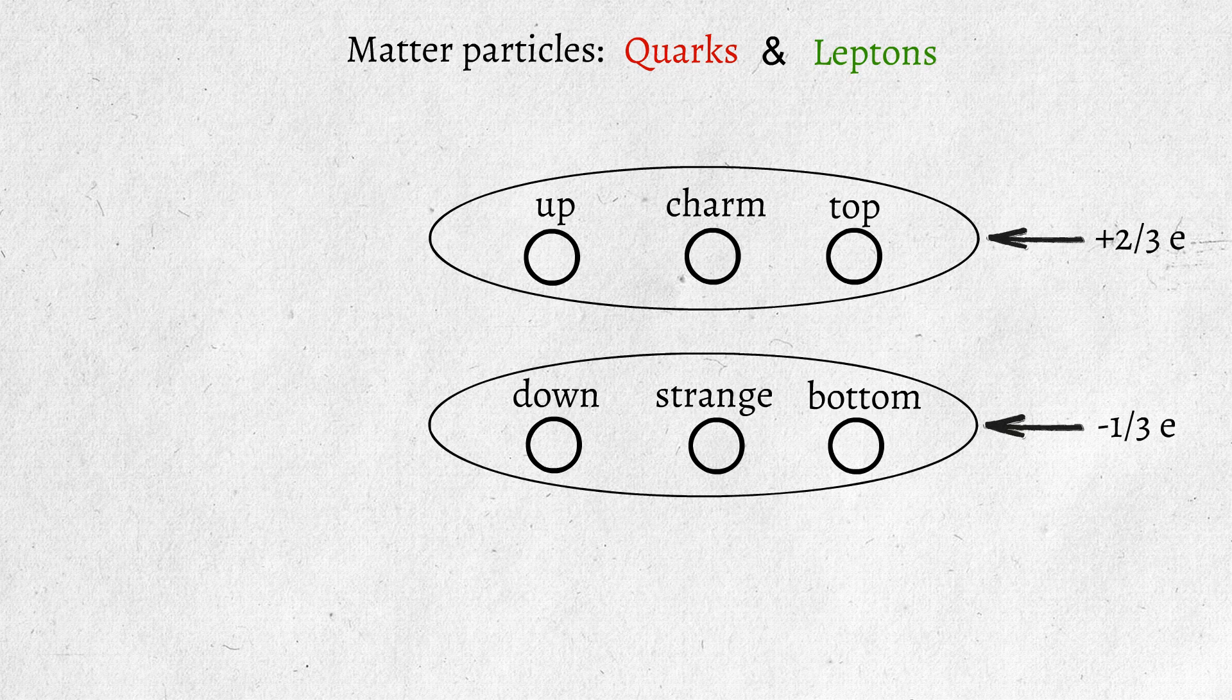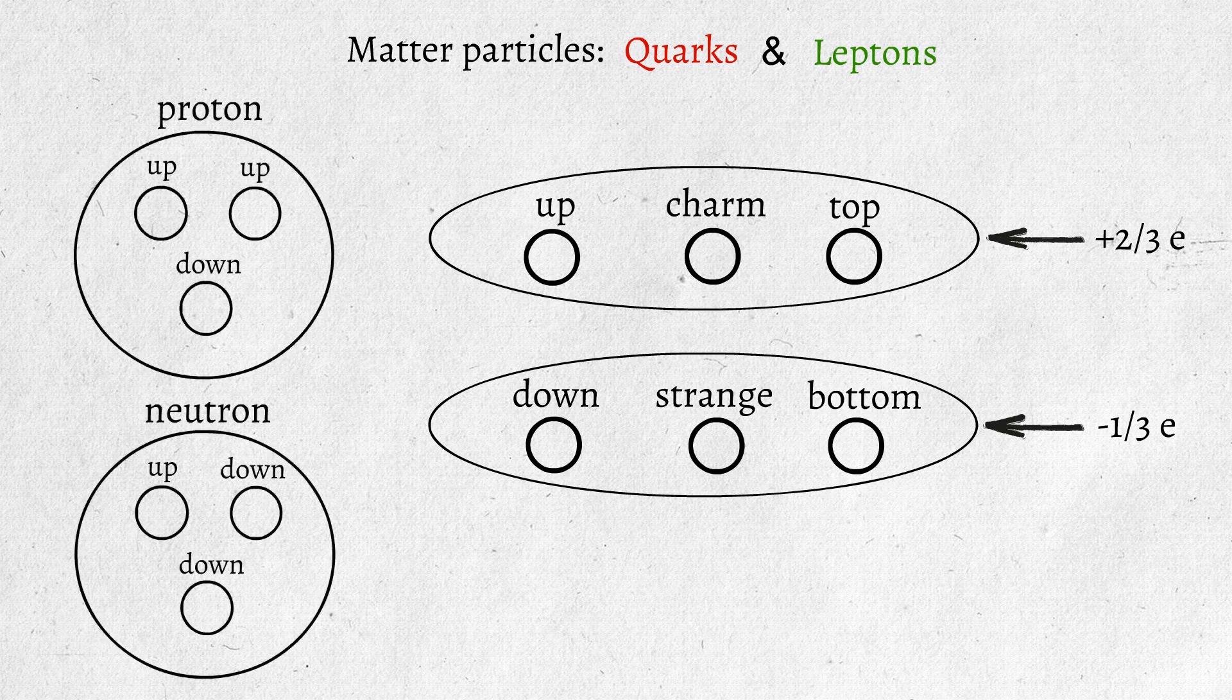Different types of quarks can combine to form larger particles. For example, the familiar protons and neutrons are composed of quarks.